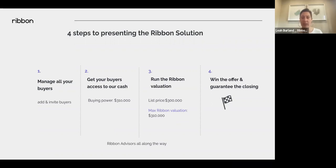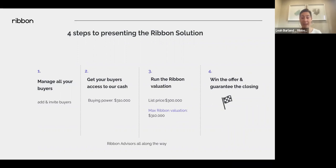The pre-approval must have income, assets, and credit checked — we'll verify with the lender and grant buying power based on that pre-approval amount. The property valuation is done similarly to a desktop appraisal. We give you a Ribbon Max Value — the maximum amount we feel the property will appraise for. This is guaranteed by Ribbon. For example, if the max value is $310K, and the appraisal comes back at $308K, Ribbon will make up that $2,000 difference.